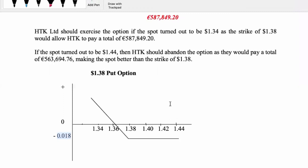With the put, I take the strike and subtract the premium from it to get the break-even: 1.38 minus 0.018 gives me my break-even point. I mark off that distance, replicate it on the other side, and draw a straight line from the strike of 1.38 across, then kink that line through the break-even point. You label the diagram: abandon, exercise, strike price, in the money for unlimited gain, and out of the money for limited loss.